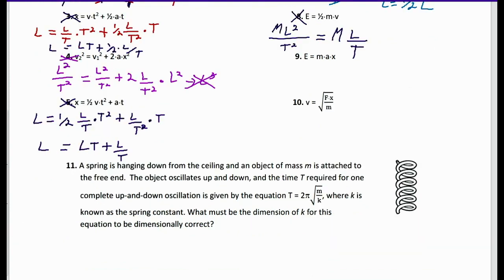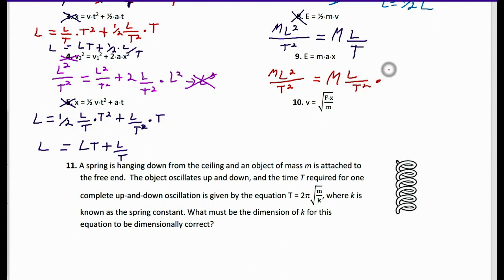Number nine: E equals M times A times X. E is ML²/T². M is M. A is L/T², and X is L. Simplifying the right side: M × L/T² × L gives ML²/T², which matches the left side. Number nine is dimensionally correct.